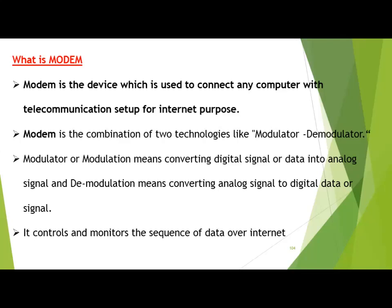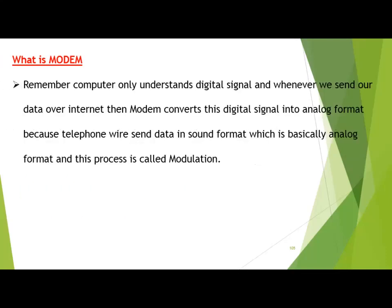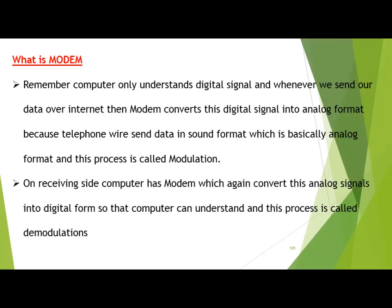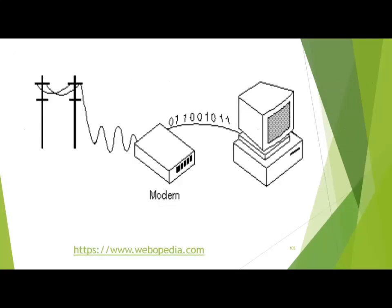On the receiving side, the modem converts analog data into digital form so the computer can understand it. Modem also controls and monitors the sequence of data over the internet and counts the bits. Here you can see bits coming from the computer, the modem converting them into analog format and sending over the telecommunication setup, and on the receiving side converting the analog signal back into digital form.